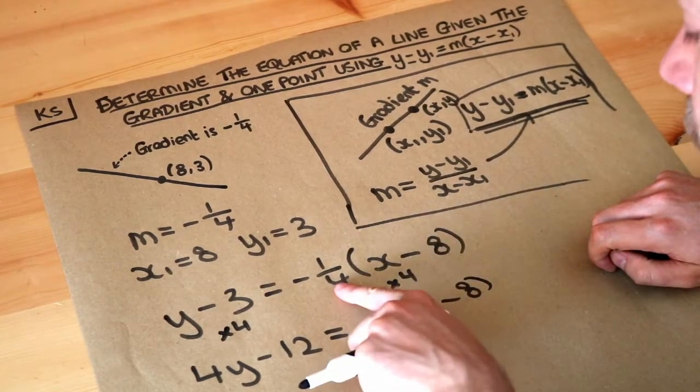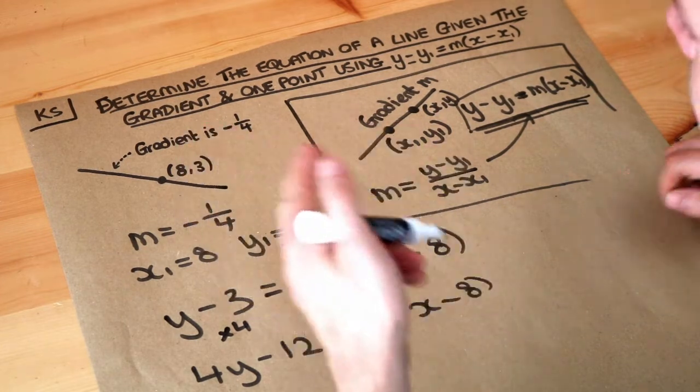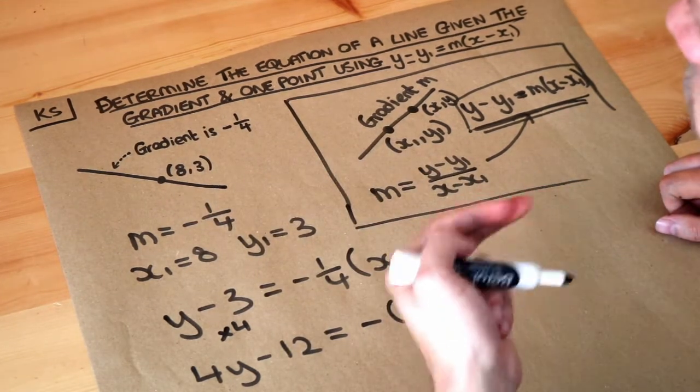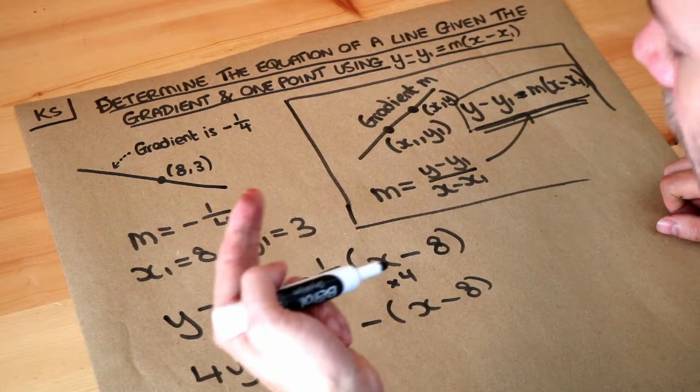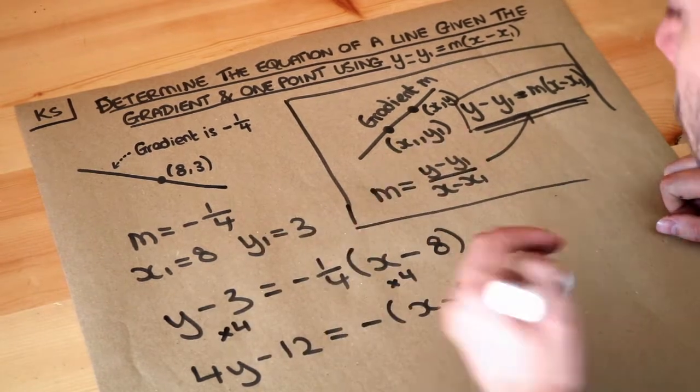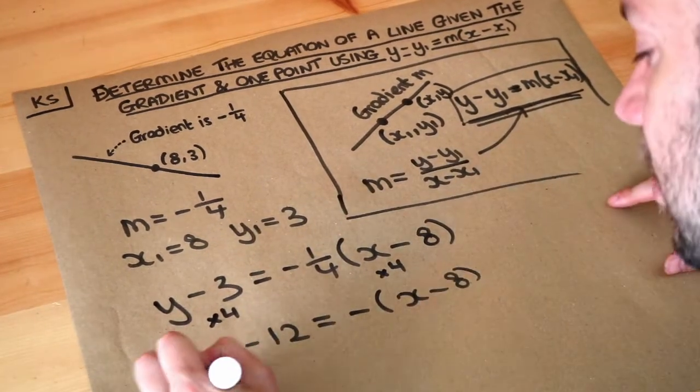You don't times both that by 4 and that by 4. That's like saying if you had 3 times 3 and you want to make it 4 times bigger, you don't then make it 12 times 12 because that would make it a lot more than 4 times bigger. And then let's just simplify that.